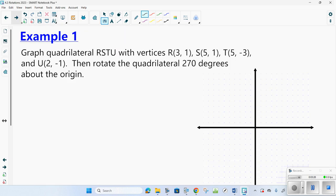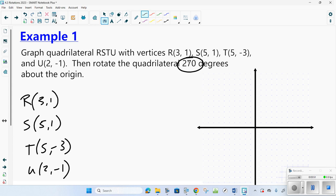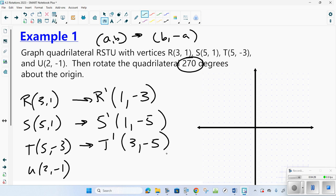I want to do a quadrilateral RSTU with vertices R(3, 1), S(5, 1), T(5, -3), and U(2, -1). I want to rotate the quadrilateral around the origin 270 degrees counterclockwise. The rule for 270 degrees is positive B, negative A. So if I was going to do R prime, it would be positive 1, negative 3. S prime, positive 1, negative 5. T prime, positive 3, negative 5. And U prime, positive 1, negative 2.